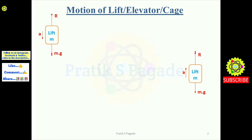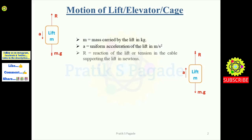Now we will see some of the nomenclatures. First, m is the mass carried by the lift in kg. 'a' is the uniform acceleration of the lift in meters per second squared. R is the reaction of the lift or tension in the cable supporting the lift in Newtons — it always acts in the upward direction, as you can see in both diagrams. Further, g is the gravitational acceleration in meters per second squared, which always acts in the downward direction.